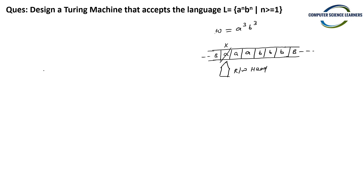We read an A, we processed that A, and after processing we wrote X in its place. Why X? We could use any other symbol as well — definitely we can. Along with this, let us simultaneously also build the transition graph.